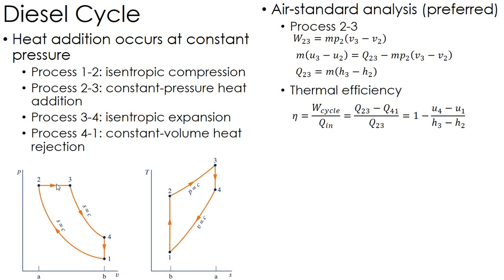So 2 to 3 over 2 to 3 gives me 1 minus Q_4-1 over Q_2-3. That's where I have u_4 minus u_1 over H_3 minus H_2. Again, H because of that constant pressure process—my Q_in is actually delta H. That's the thermal efficiency using the air standard analysis.